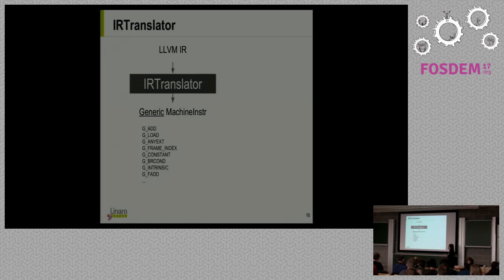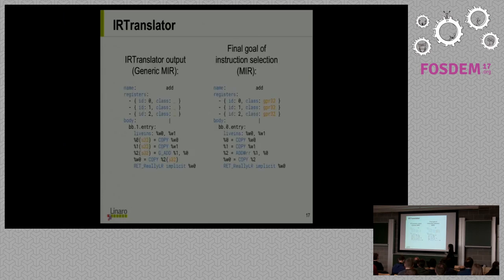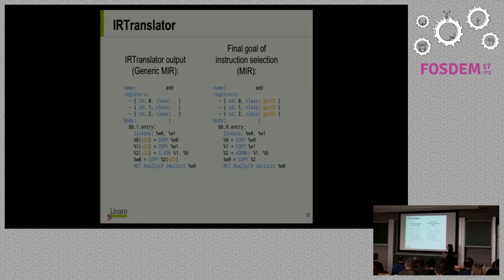Then we run legalization as we did before, but this time it's just one step. We're going to have register bank selection, which is a new concept. It was introduced specifically for Global iSel. We're going to see why. And finally, we do instruction selection, which as before means selecting target-specific operation codes. Let's take them in order. The IR translator is going to take as input LLVM IR, and it's going to output generic machine IR, which means that instead of those target-specific opcodes like add WRR, we're going to use generic opcodes like generic add, generic branch, generic store, and so on.